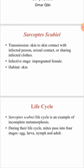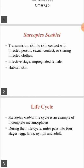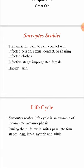Transmission of the disease occurs through skin-to-skin contact — direct skin-to-skin contact with an infected individual or through sexual contact. This is the most important way of transmission of the disease. However, it could also be transmitted by sharing clothes with an infected individual.